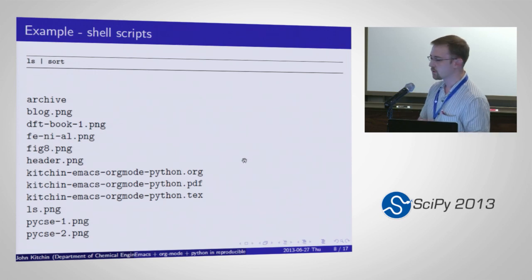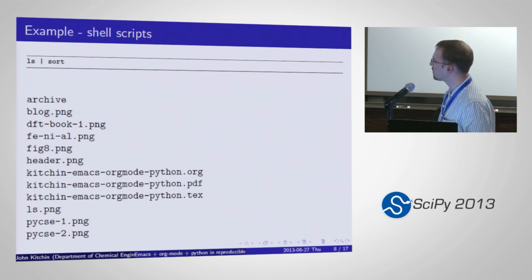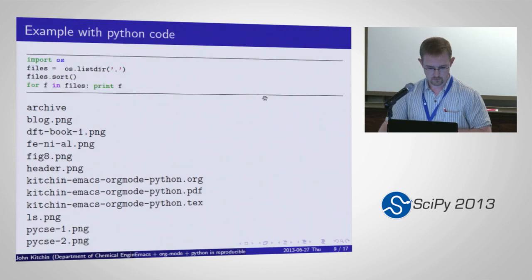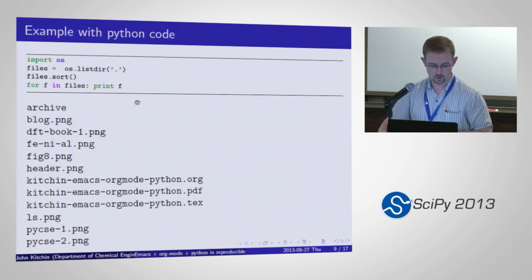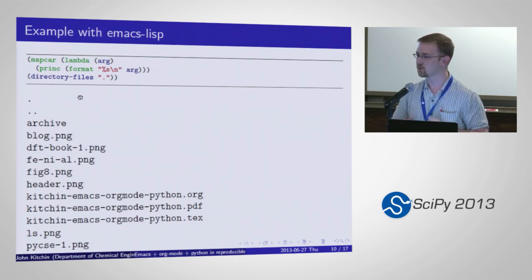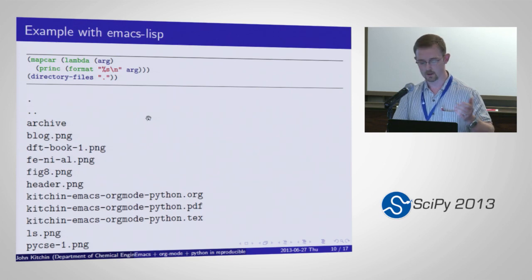Some simple examples of things you can do: on the top I have a shell script that lists the contents of a directory and pipes it to sort — the output is captured below. This is a Python code block doing the same thing: import OS, list the directory, sort the files, print them. This is syntax-highlighted. You can also do Emacs Lisp. You can embed all kinds of languages into this file and get the output captured here. None of this is cut and paste — I literally typed the code in, ran it, and the output is there.